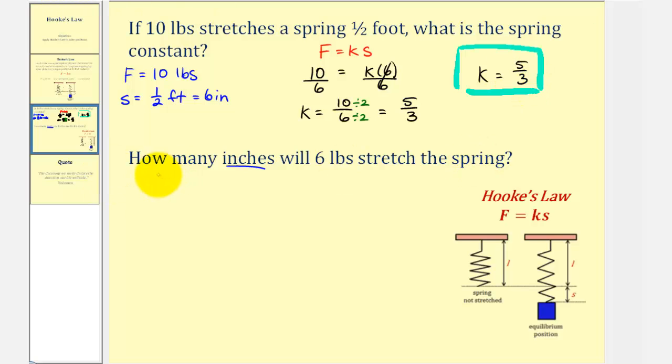So to answer the second question, how many inches will six pounds stretch the spring, we can now use the direct variation equation F equals five-thirds times s. So to answer this question, we want to find s when F equals six pounds.